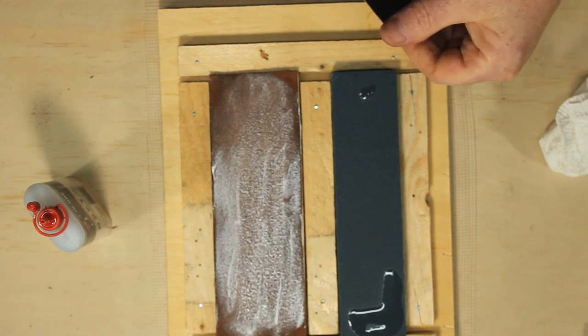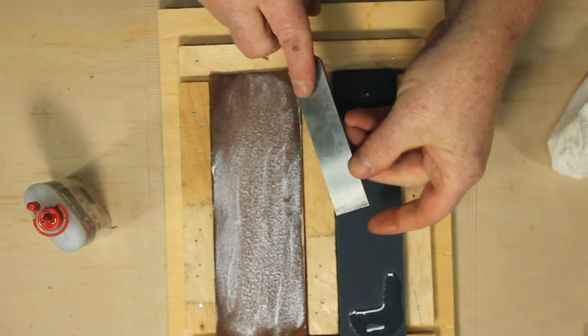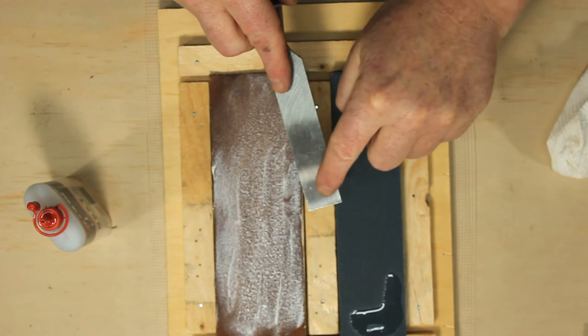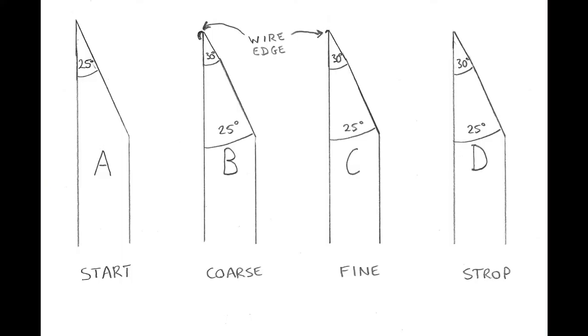You can see the new bevel being formed and the blade's developed a wire edge on the back side. This means our chisel is now at stage B with a 30 degree angle at the point and a wire edge.